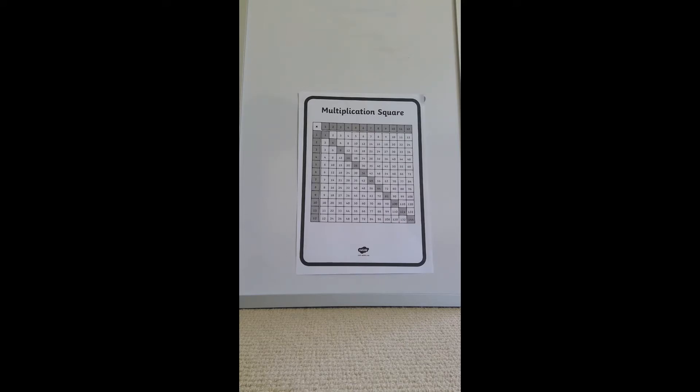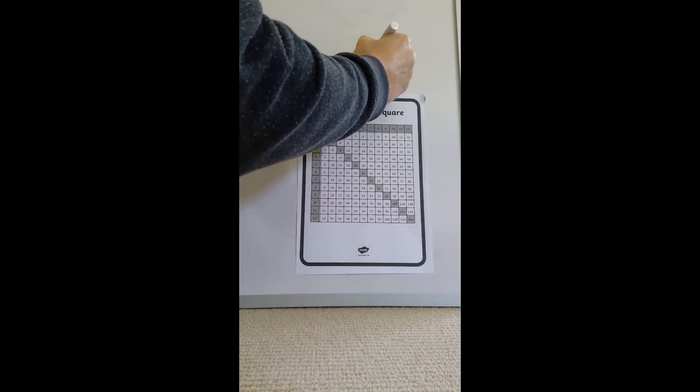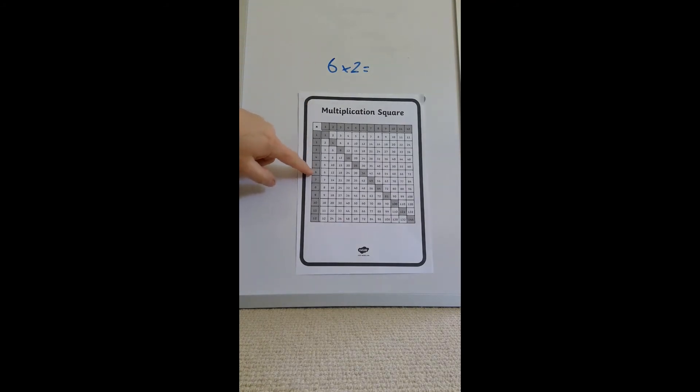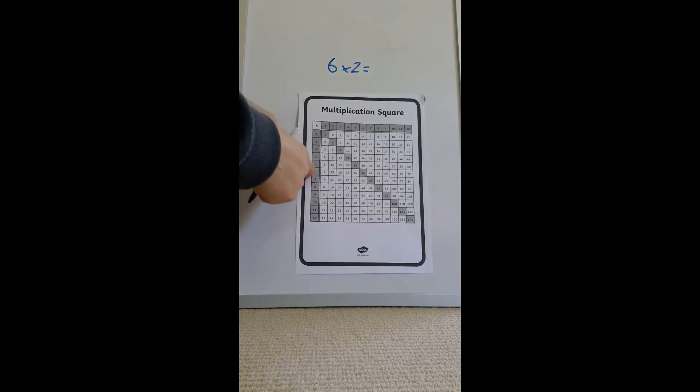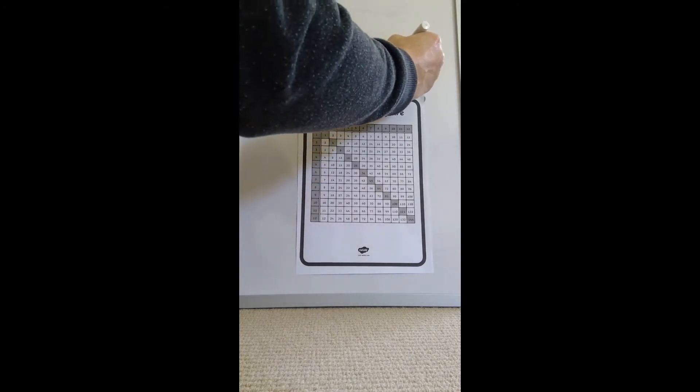To use a multiplication square, if you have a problem such as 6 times 2, you simply come down the side, find six, then come across until you find two, and you meet in the middle. So in this case, 6 times 2 is 12.